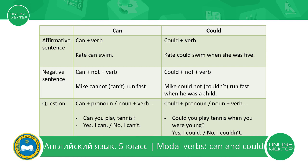Very good. Now let's look at negative sentences. To make a negative sentence with can, we use modal verb can, add negative adverb not, and add the verb. For example, Mike cannot run fast. Also, please pay attention to the short form of cannot: can't. Mike can't run fast.